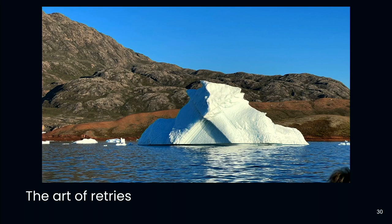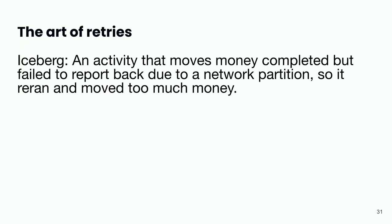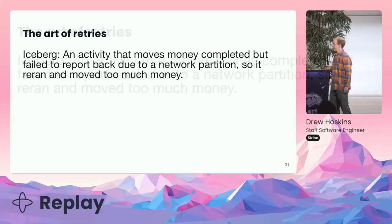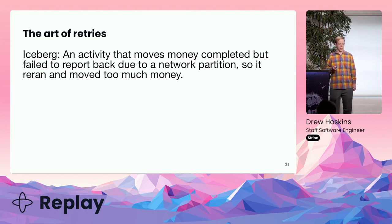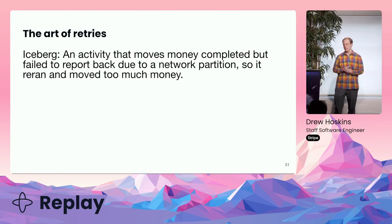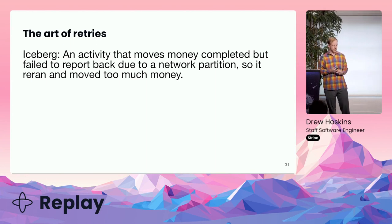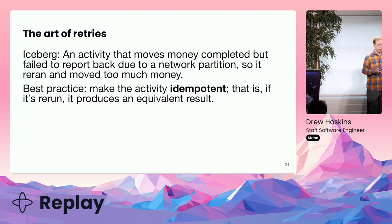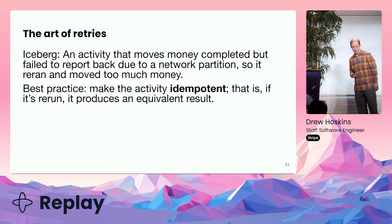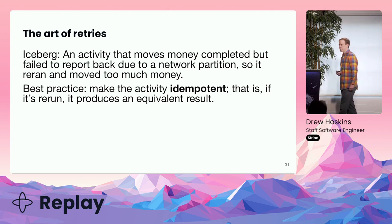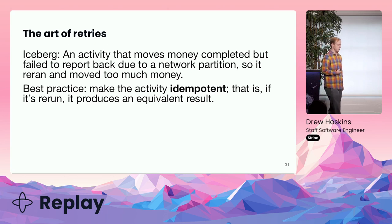Retries — another very common source of icebergs. Going back to the money movement example: an activity moves money and then succeeds, but it never gets to tell Temporal that it succeeded because of a network partition. So it reruns and might move money twice. The best practice is therefore to make the activity idempotent, so that if it's rerun it's not going to resend the money. This could be done by having a unique identifier for the money movement that we can check to see if that movement has already happened.